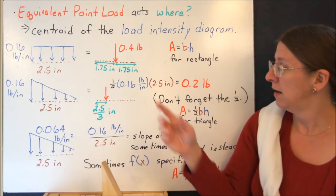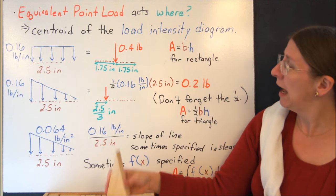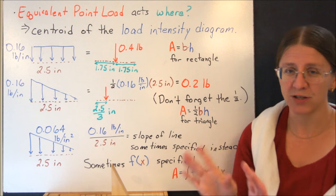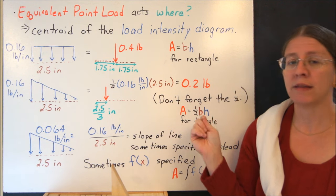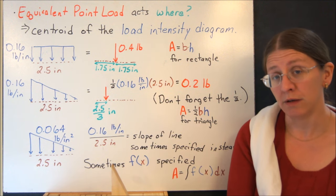One-half base times height. So one-half base times height gives me 0.2, which is luckily half of what I had before. It's a nice unit block. It's easy. Don't forget the half. A lot of people forget the half, get the problem wrong. Be a little bit careful here.